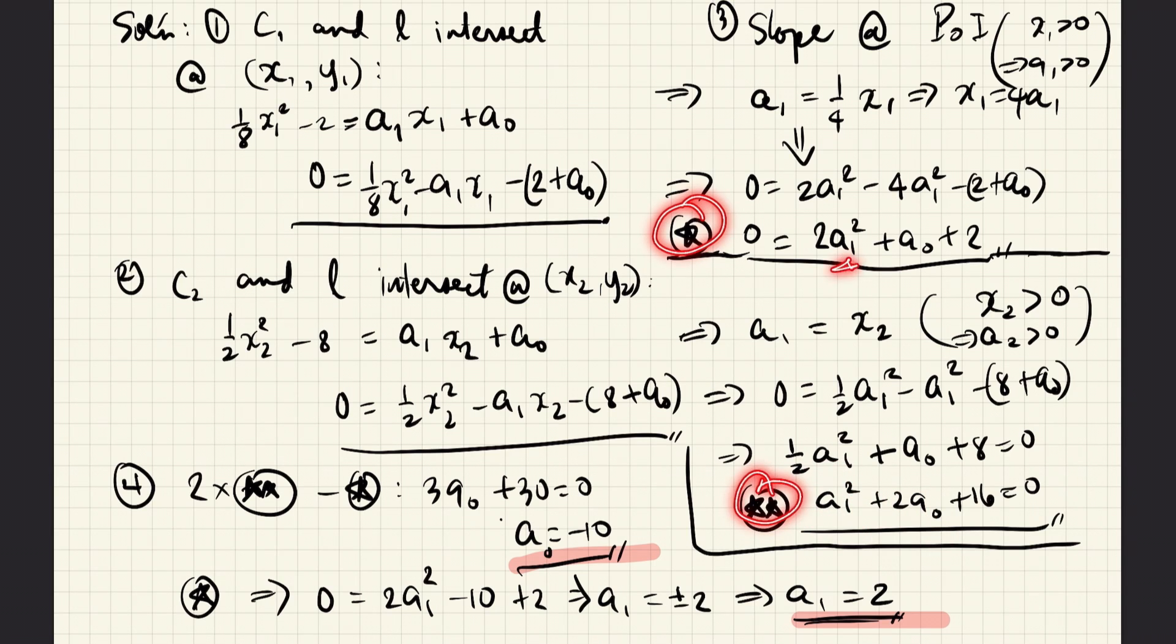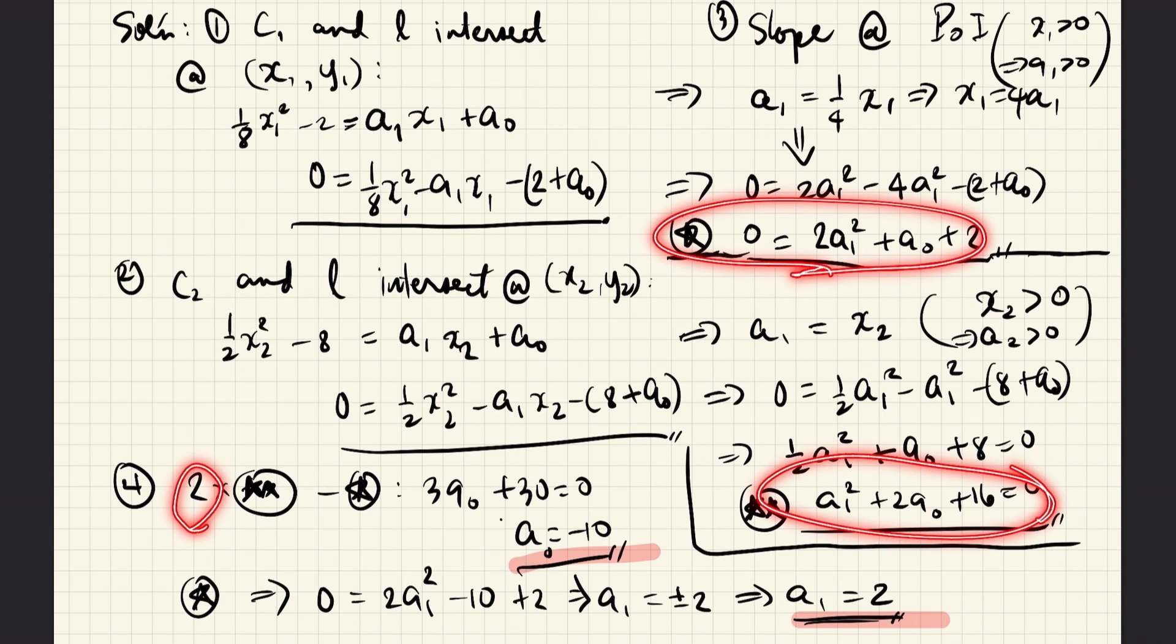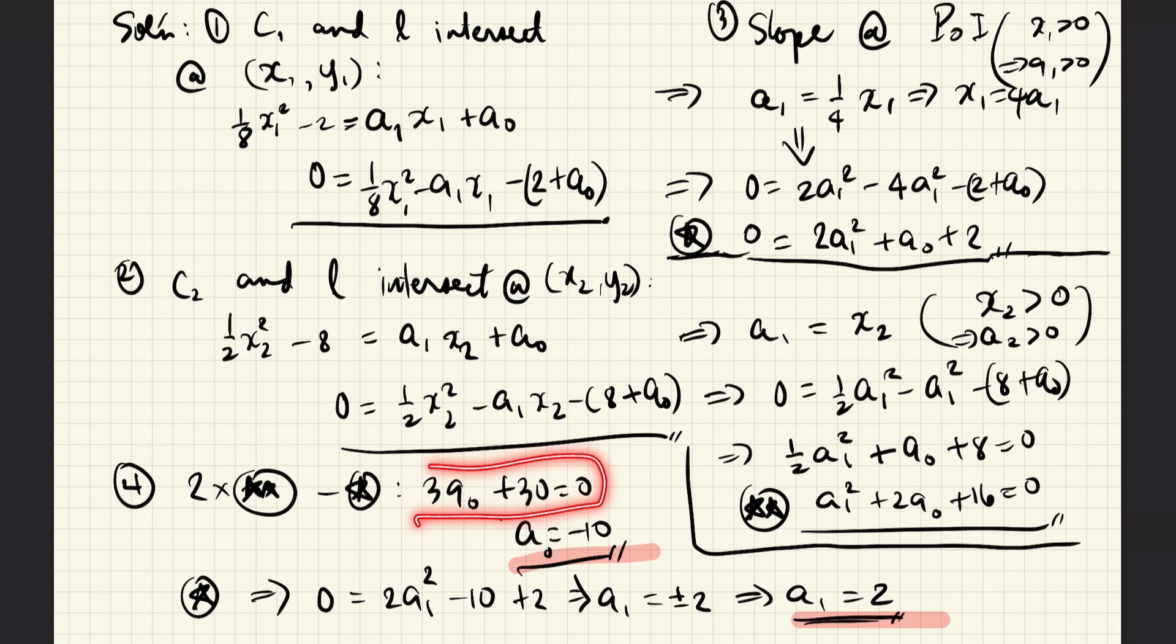We can solve star 1 and star 2 for a1 and a0. First, we remove a1. We do that by multiplying star 2 by 2 and then subtracting star 1 from that. Doing that, we get this equation, which is now easy to solve for a0. We obtain an a0 that is -10.